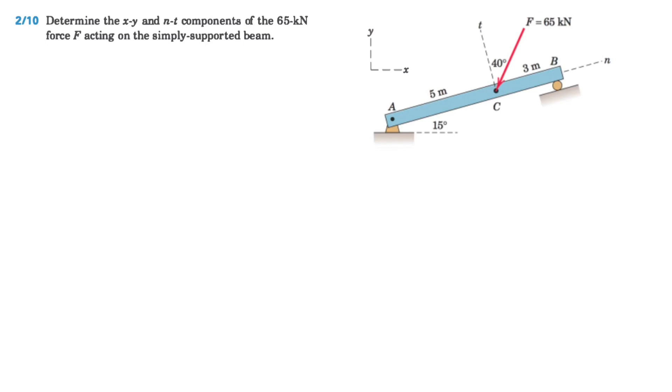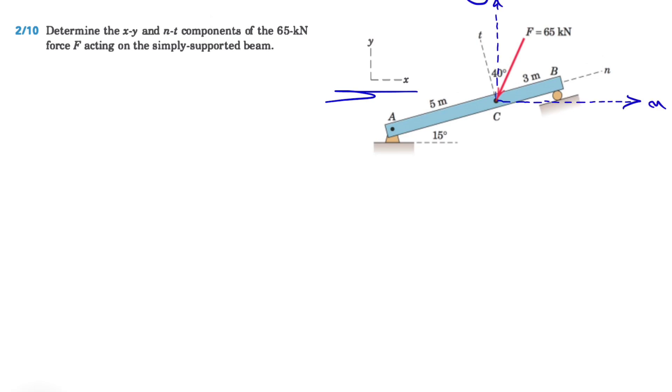Alright, welcome back guys. In this problem we need to determine the x, y, and n-t components of the 65 kilonewton force acting on the simply supported beam. We can see their x and y axis in here and n-t are already on the figure, so I'm just going to draw the x and y axis at point C so we can see it better.